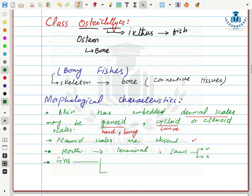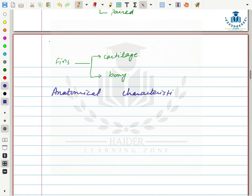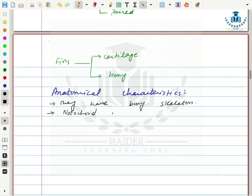They have fins of two types — median (single) or paired. Fins may be cartilaginous or bony in structure. Anatomical characteristics: they have a bony skeleton. Notochord is also present and persists in different parts of the body. Their heart is two-chambered — one chamber is the atrium and the other is the ventricle. Their brain consists of ten pairs of cranial nerves.